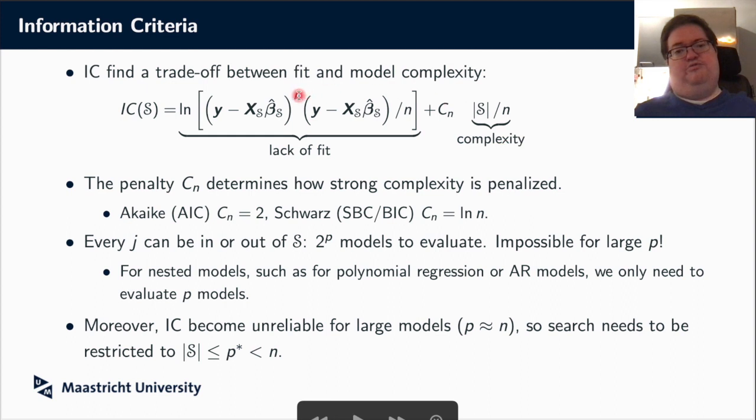Now we often calculate this assuming normality, and then we get this familiar form where we get the log of the residual sum of squares and an error term. And we simply do this over all possible models S, and we choose the one which minimizes this information criterion. So here we can again explicitly see the two terms. The first term measures how well the model fits, so actually how well it's not fitting, because it looks at the residuals.